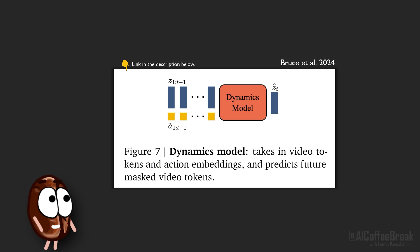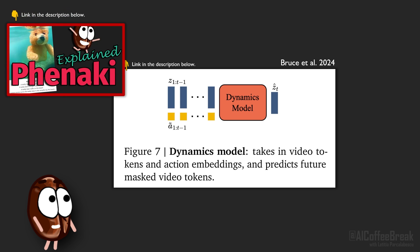The dynamics model is just a decoder. It takes in the tokenized video from the video tokenizer, the actions from the latent action model, and predicts the tokens of the next frames. Here the architecture is again based on an ST-transformer that works like the MaskGIT architecture.